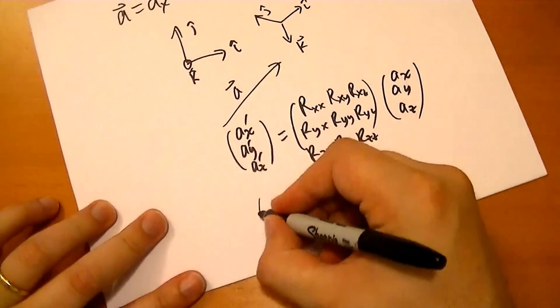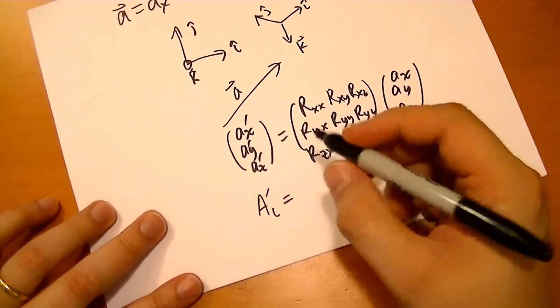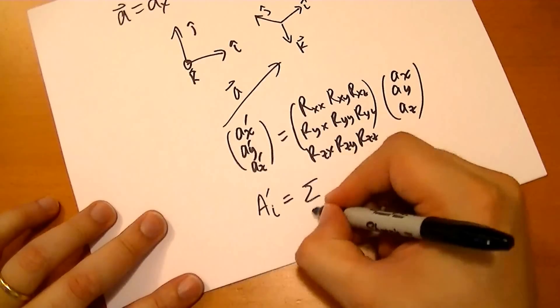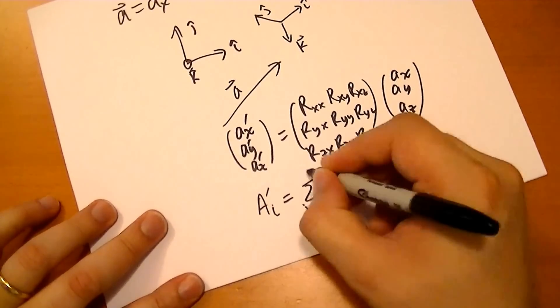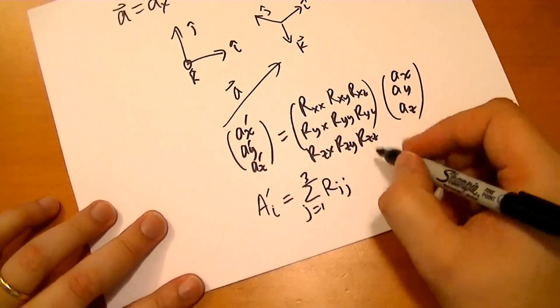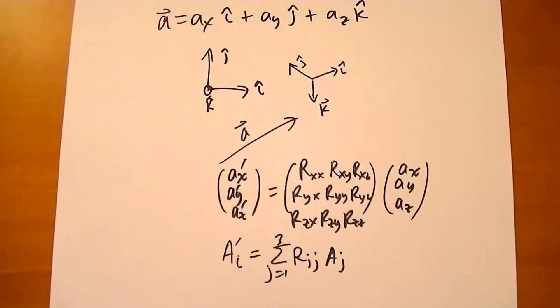And as a shorthand, I use capital letters, oh well. So i, the i-th component of the new component system, is equal to the sum from j equals one to three of the ij component of the rotation vector times the j component of the original axes.